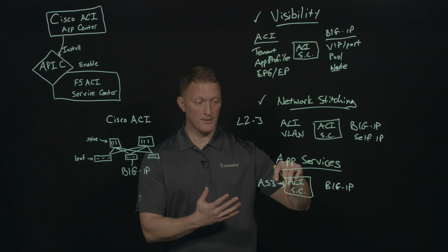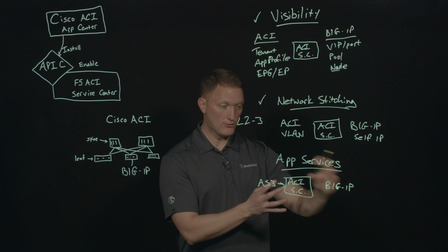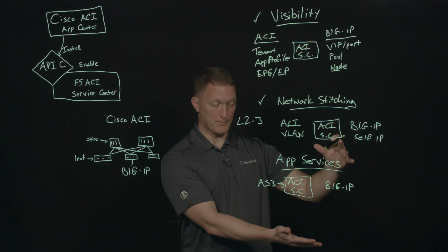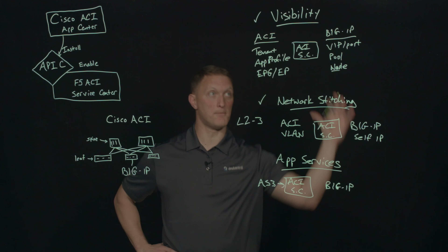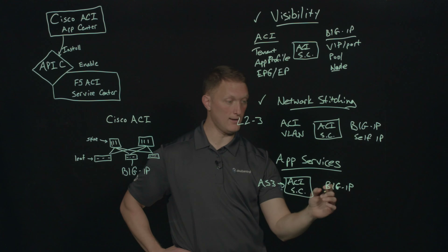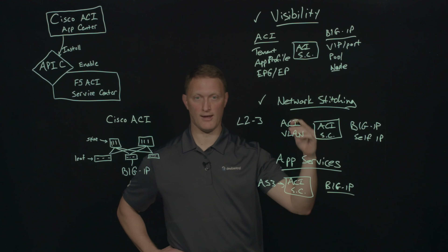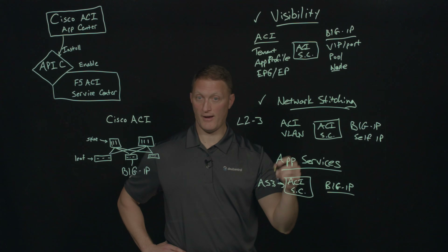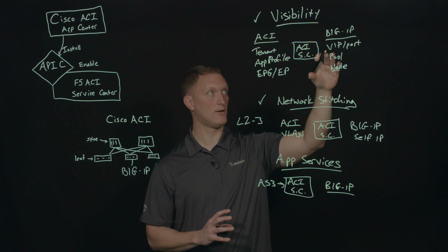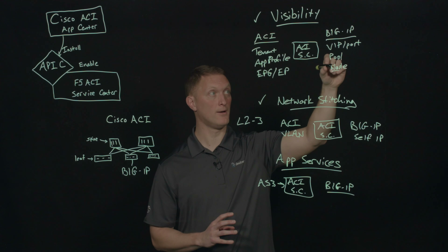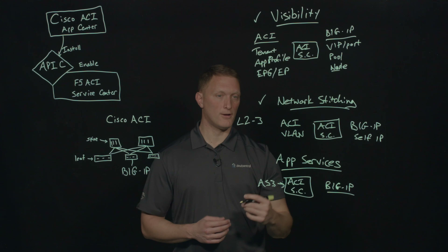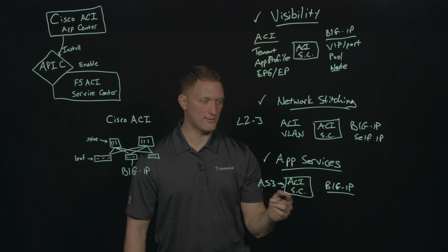Another thing you can do is, once you've used this AS3 declaration to build out the application, you can come back to the visibility part. You can have visibility into what this Big IP just had deployed — virtual servers, profiles, iRules, or whatever was set up as part of your declaration — and map that back to the different endpoint group, app profile, and tenant in ACI. So all three capabilities can really start to work together.